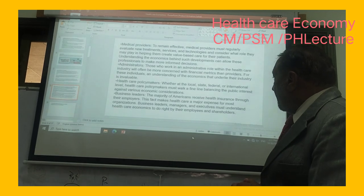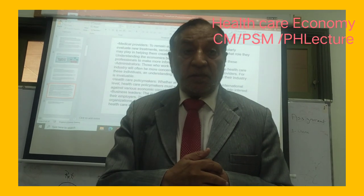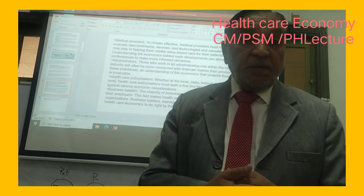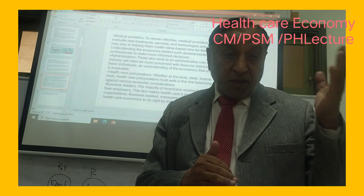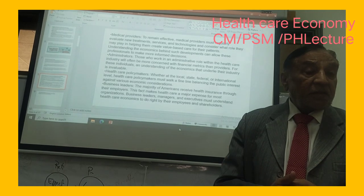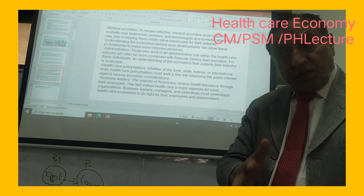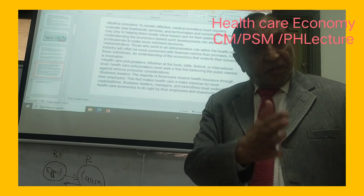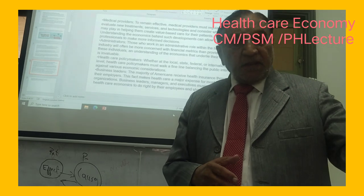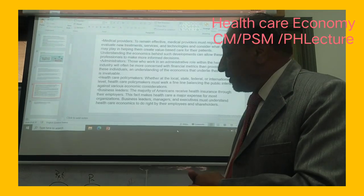Healthcare policy makers and medical providers must be trained in health economics in terms of demand and supply. For example, if 200,000 students apply for MDCAT but only 20,000 are selected, where do the remaining 180,000 go? The healthcare system has therefore evolved to include allied medical sciences, channeling aspiring students into other fields.